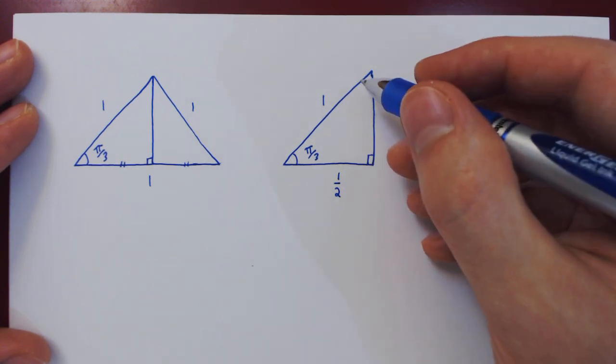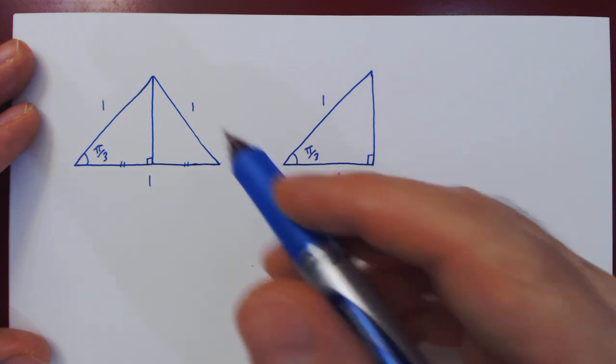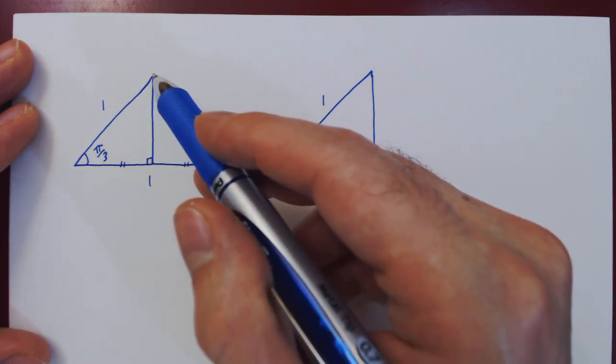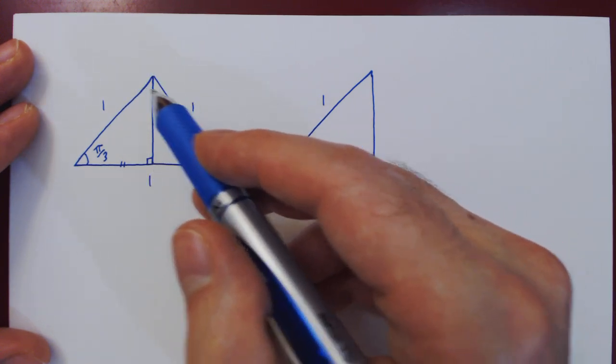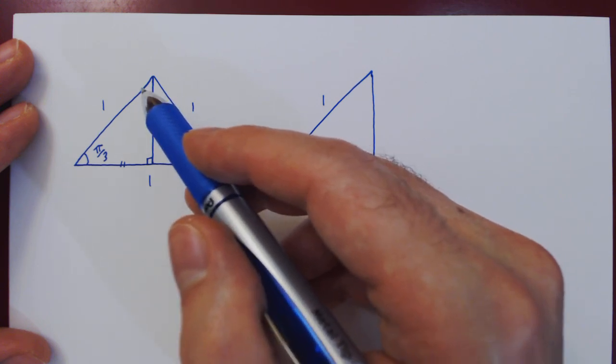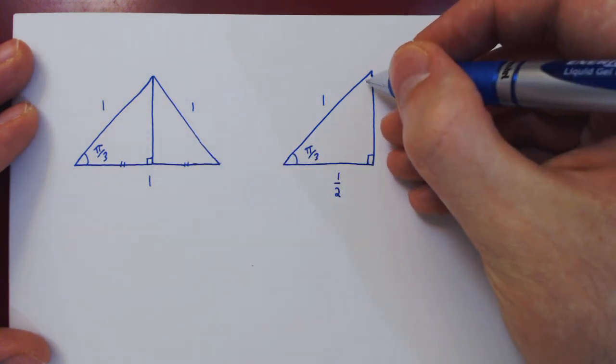We can find the other angle in two different ways. By symmetry, the perpendicular bisects this angle. As the angle is π/3, half of it will be π/6.